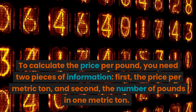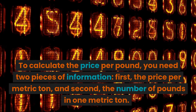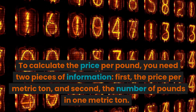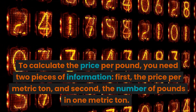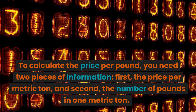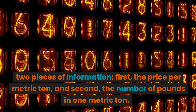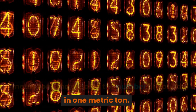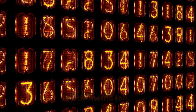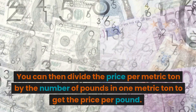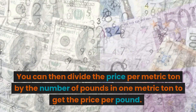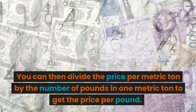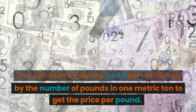To calculate the price per pound, you need two pieces of information. First, the price per metric ton, and second, the number of pounds in one metric ton. You can then divide the price per metric ton by the number of pounds in one metric ton to get the price per pound.